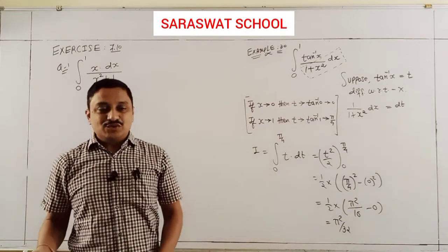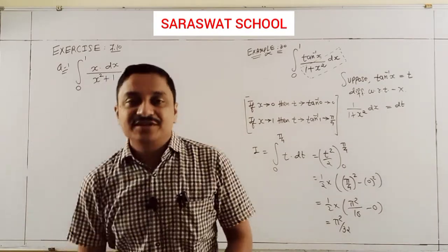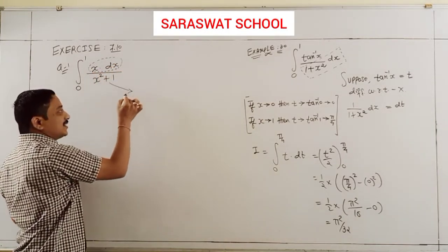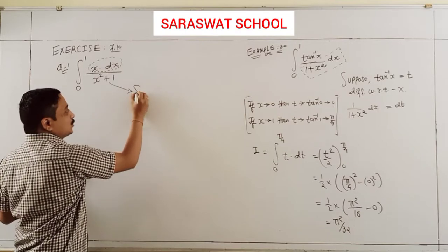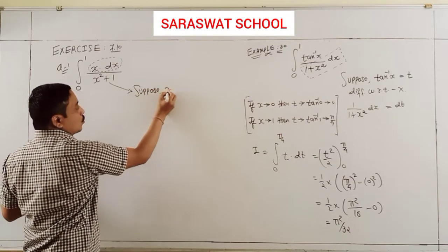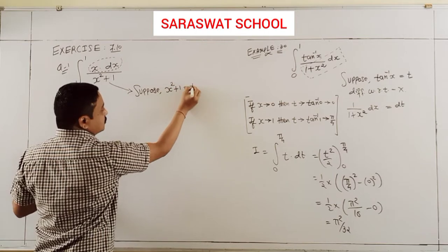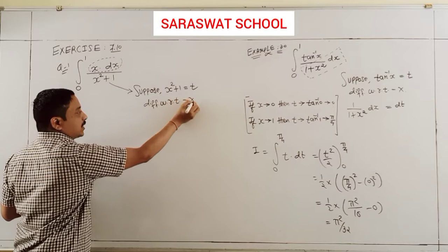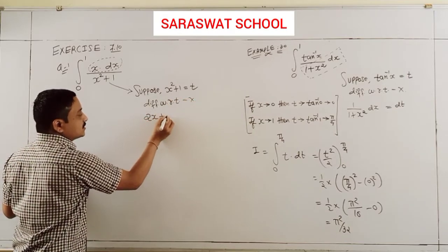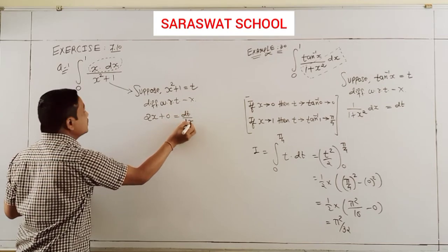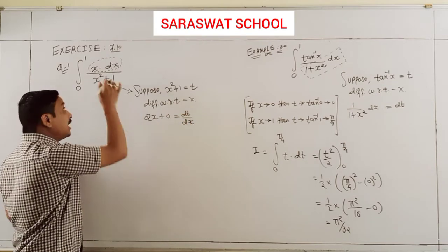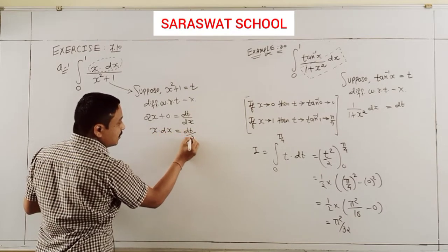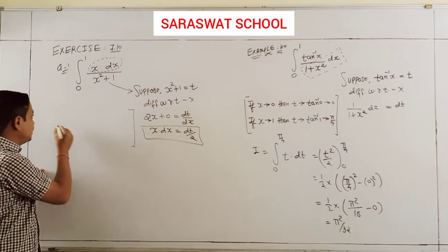So students, here I use substitution. When my derivative is x dx, I suppose x² plus 1 equals t. Differentiation with respect to x gives 2x dx = dt, so what is x dx? It is dt/2.